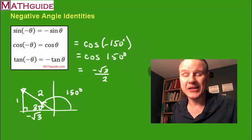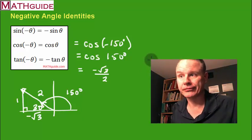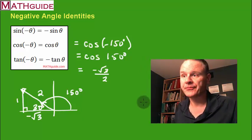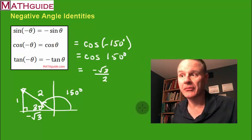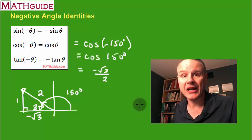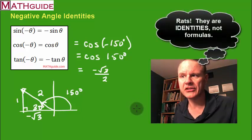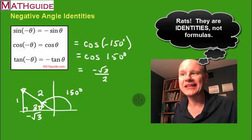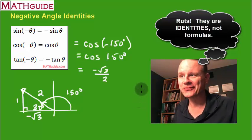I'm going to skip tangent — it works pretty much like the way sine works. Now let's come to some understanding as to why these identities work the way they do.